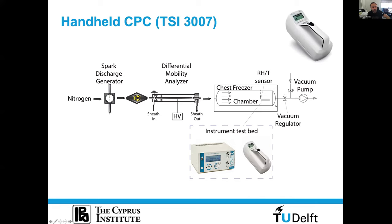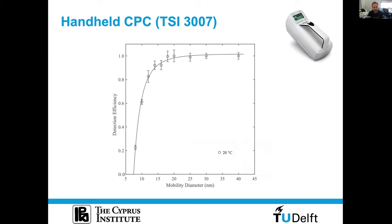There are several OPCs available for measuring particle concentration with UAVs. However, when we are interested in the smaller fraction — anything smaller than 300 to 500 nanometers — we have to use other techniques. One system we tested was the miniaturized handheld CPC from TSI, the model 3007. The setup uses a spark discharge to generate particles, a DMA to size-select them before inserting into the chest freezer, and then compares an electrometer and the CPC to determine detection efficiency.